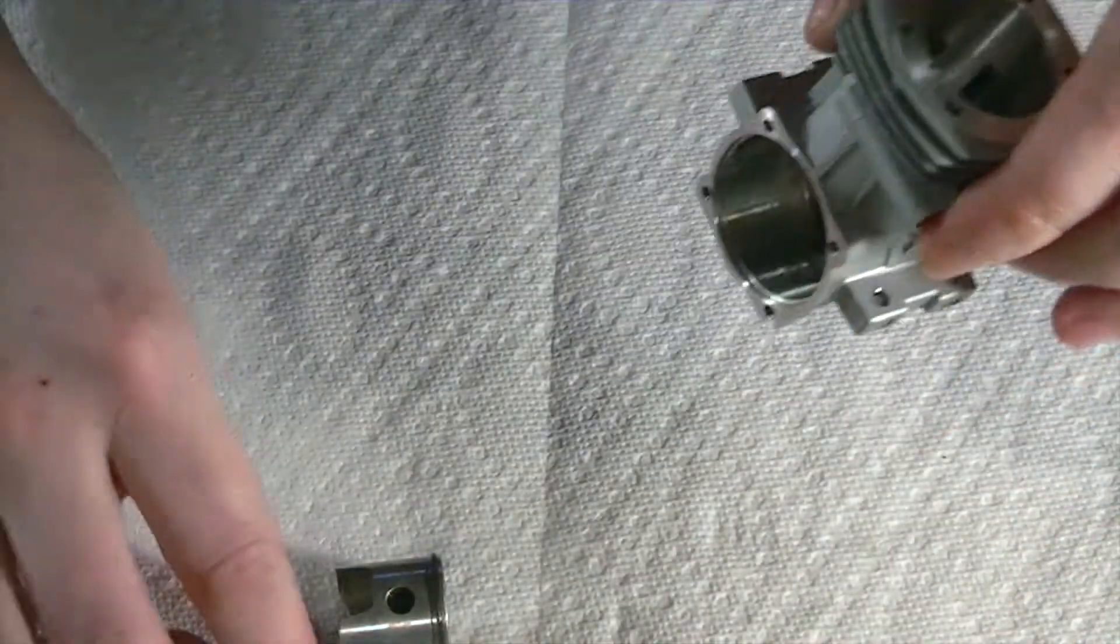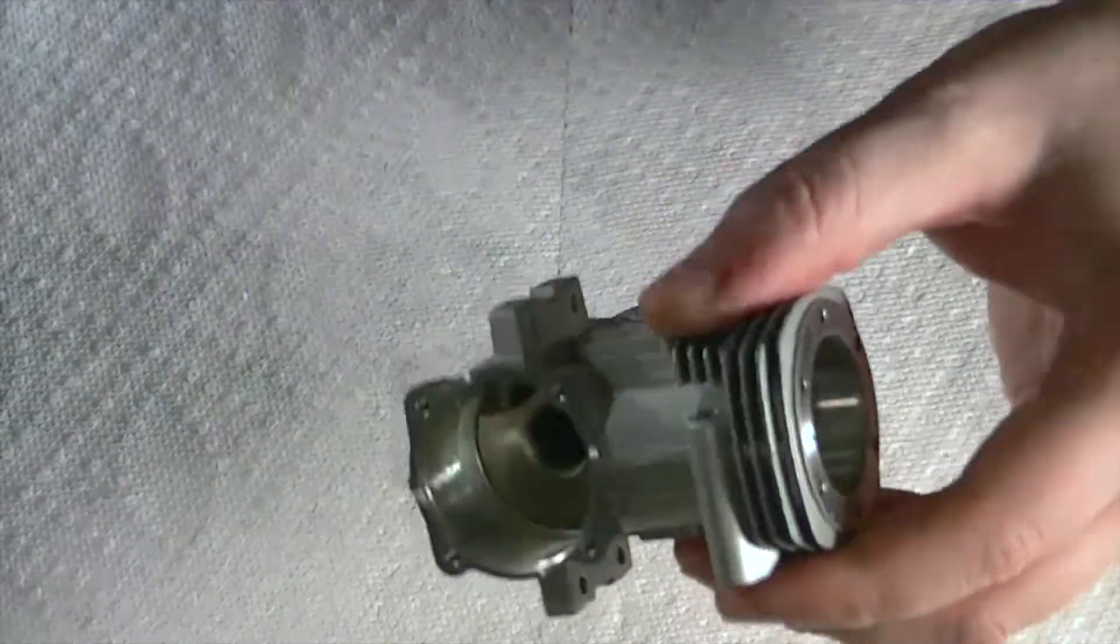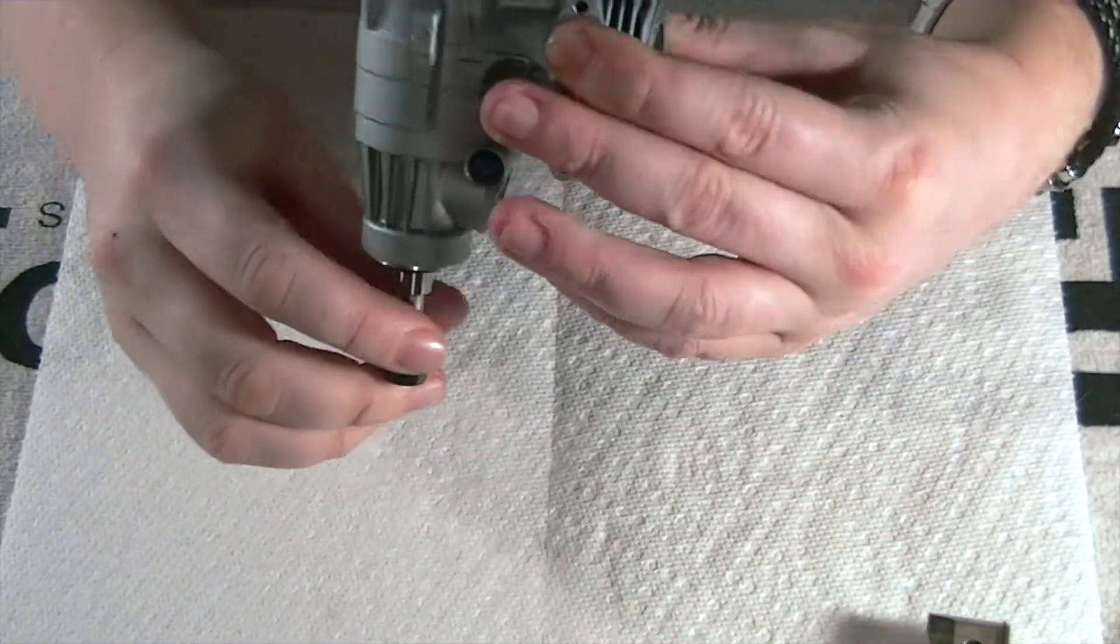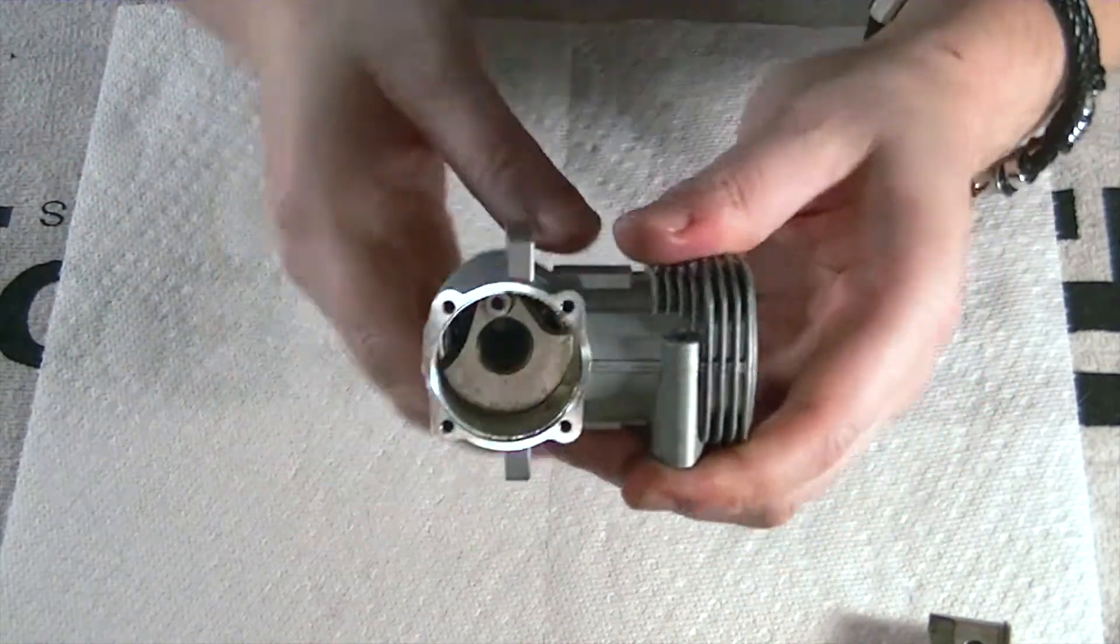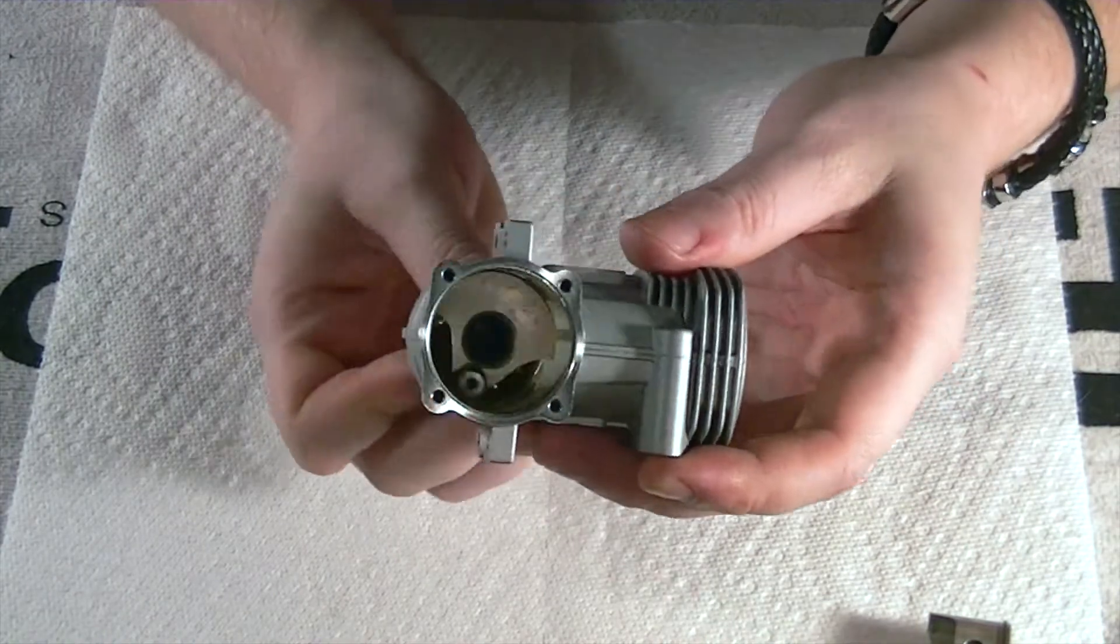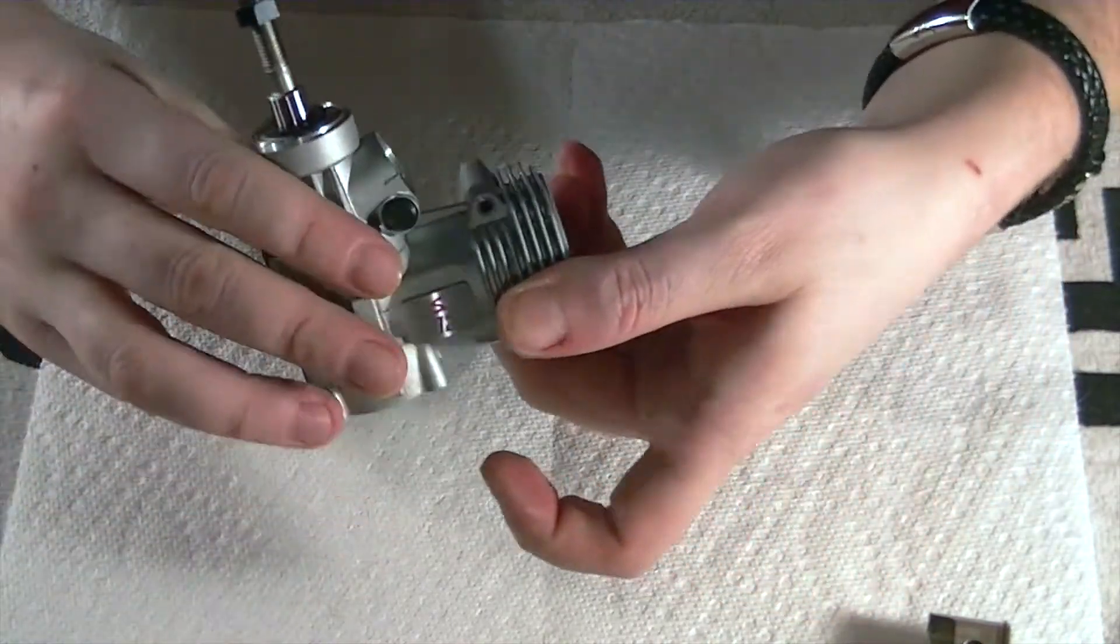Now at this point in time, let me set the piston over to the side here. At this point in time again, you could go ahead and take a look at your rear bearings. You know, you can push this whole assembly out. I'm going to leave that in because again, the motor's brand spanking new. But this would be basically a deconstructed motor.